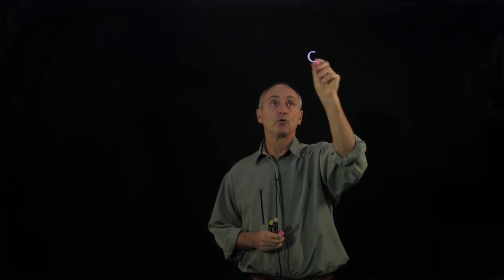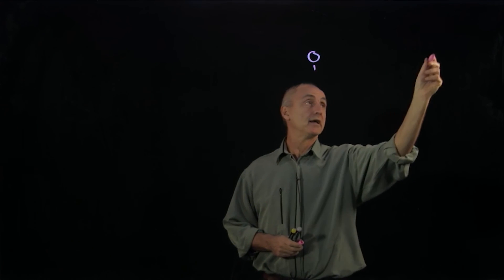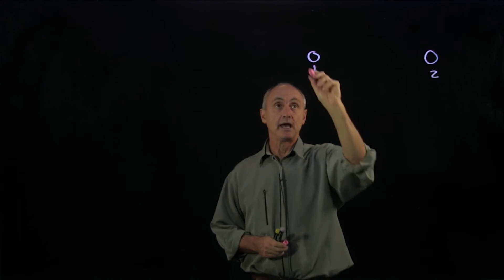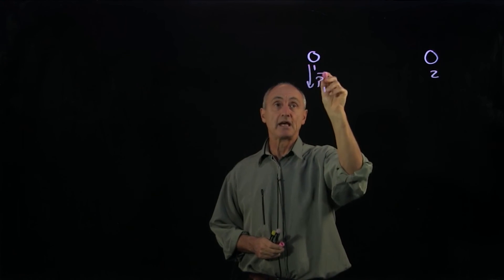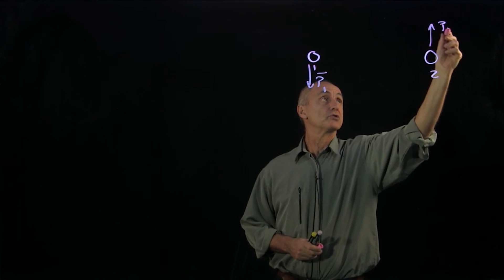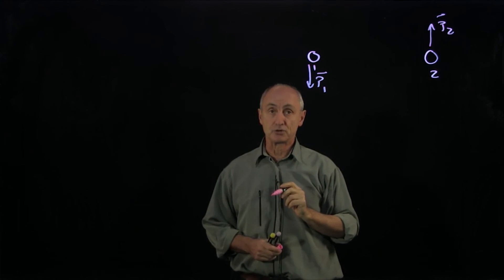I'd like to now calculate the angular momentum of a two particle system. So here's one particle, call that 1, and here's the other particle, 2. Particle 1 has a momentum in the downward direction, and particle 2 has a momentum in the upward direction.